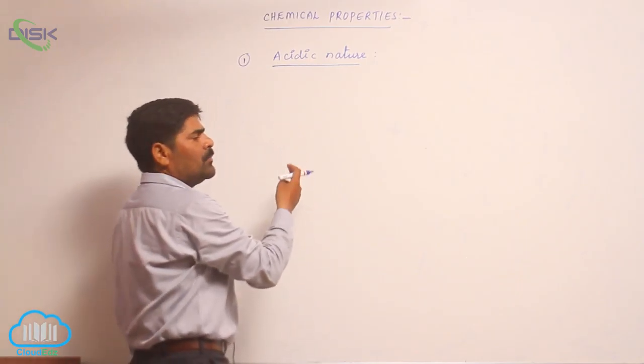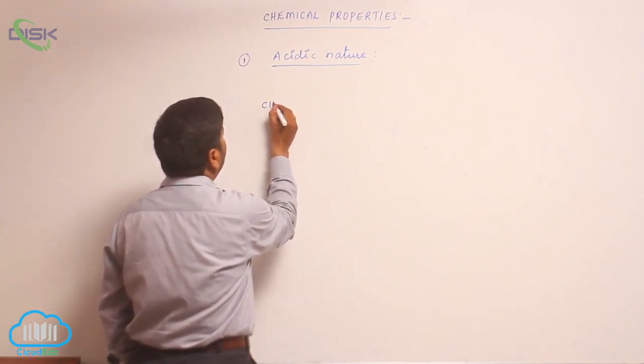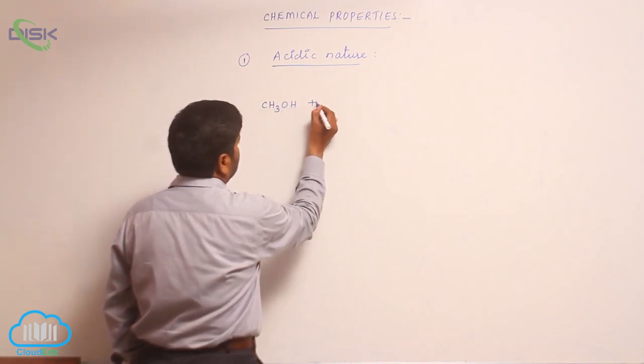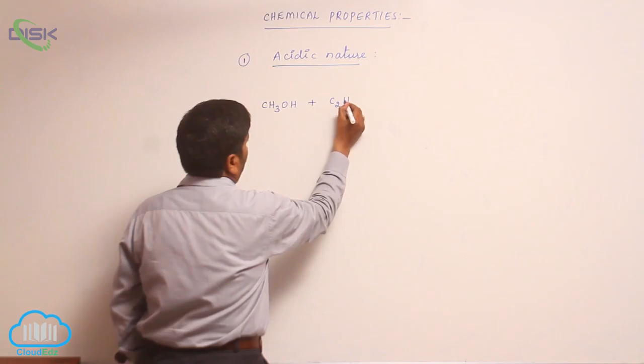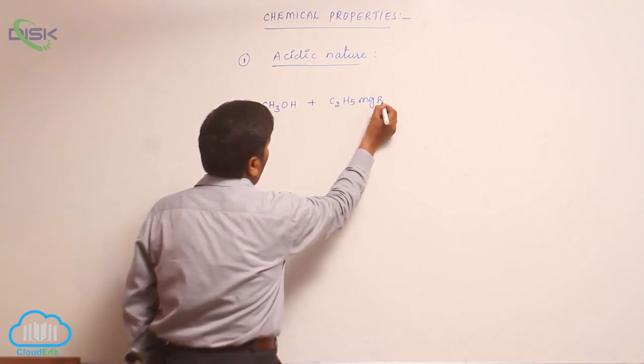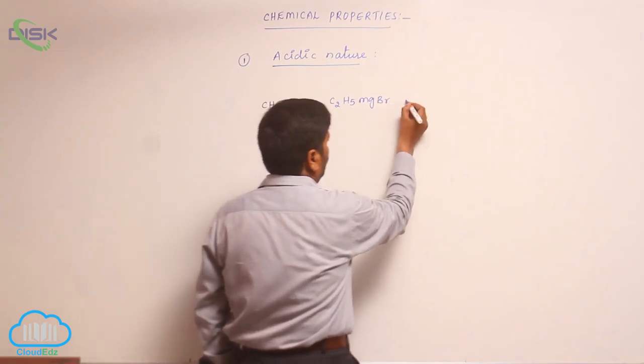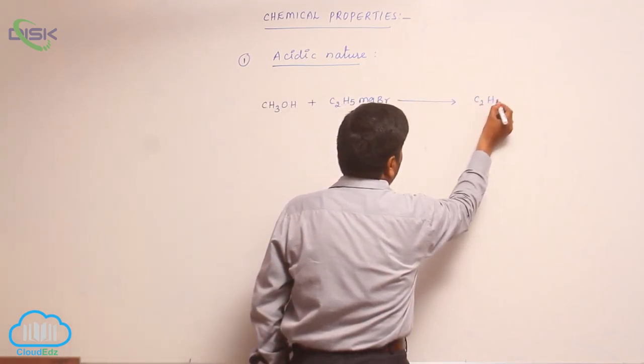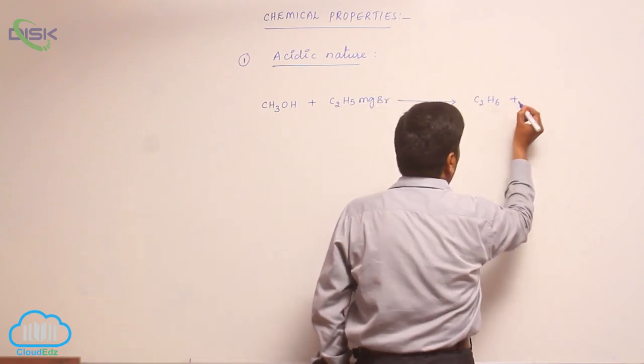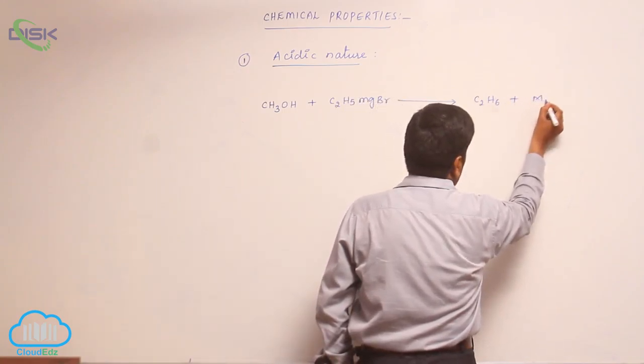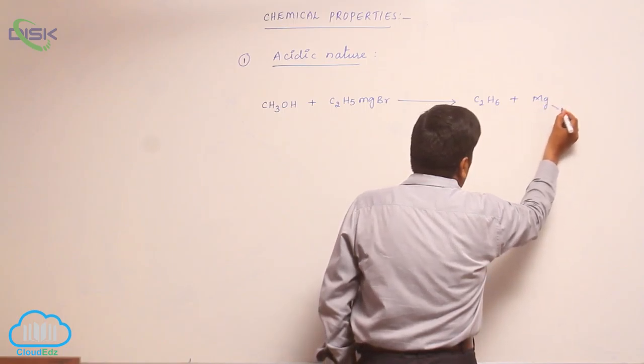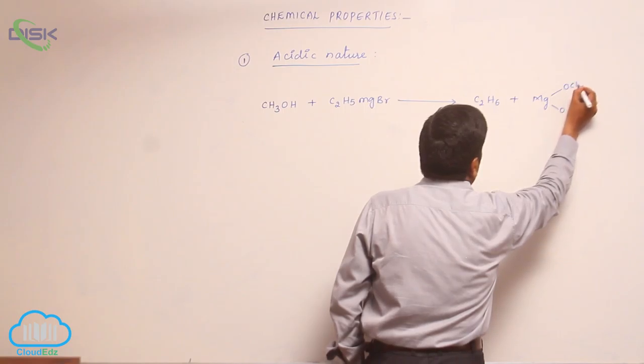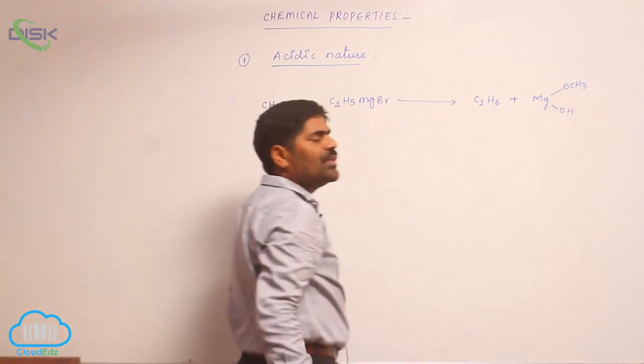One more example related to this. When methyl alcohol reacts with ethyl magnesium bromide, it forms C2H6 plus magnesium OH, OCH3. This is the byproduct.